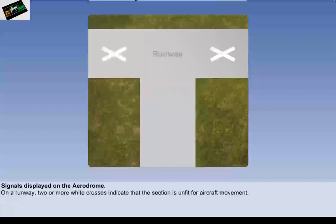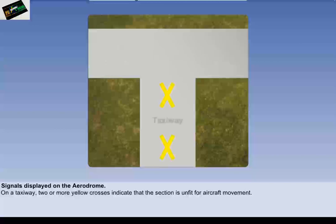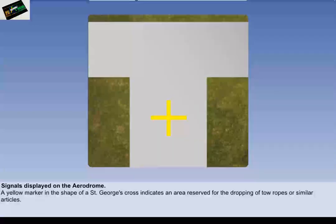On a runway, two or more white crosses indicate that the section of the runway is unfit for aircraft movement and is not to be used by aircraft in any circumstances. A yellow cross indicates that that portion of the taxiway up to the next standard marking is unfit for use by aircraft. On a selected part of the aerodrome, a yellow marker in the shape of a St George's cross indicates an area reserved for the dropping of tow ropes or similar articles.